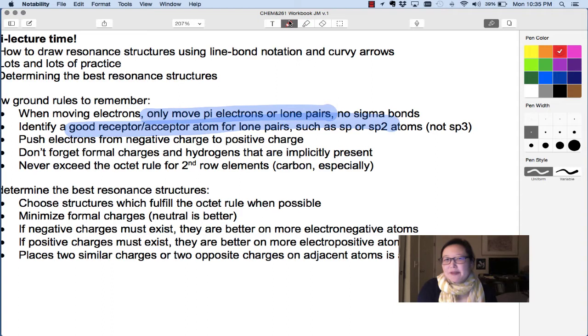Do you know why sp3 doesn't want to take electrons? What geometry is it? What shape is sp3? Sp3 is tetrahedral. That means that the center already has an octet. It's completely full. If you give it more electrons, it's going to have over an octet.